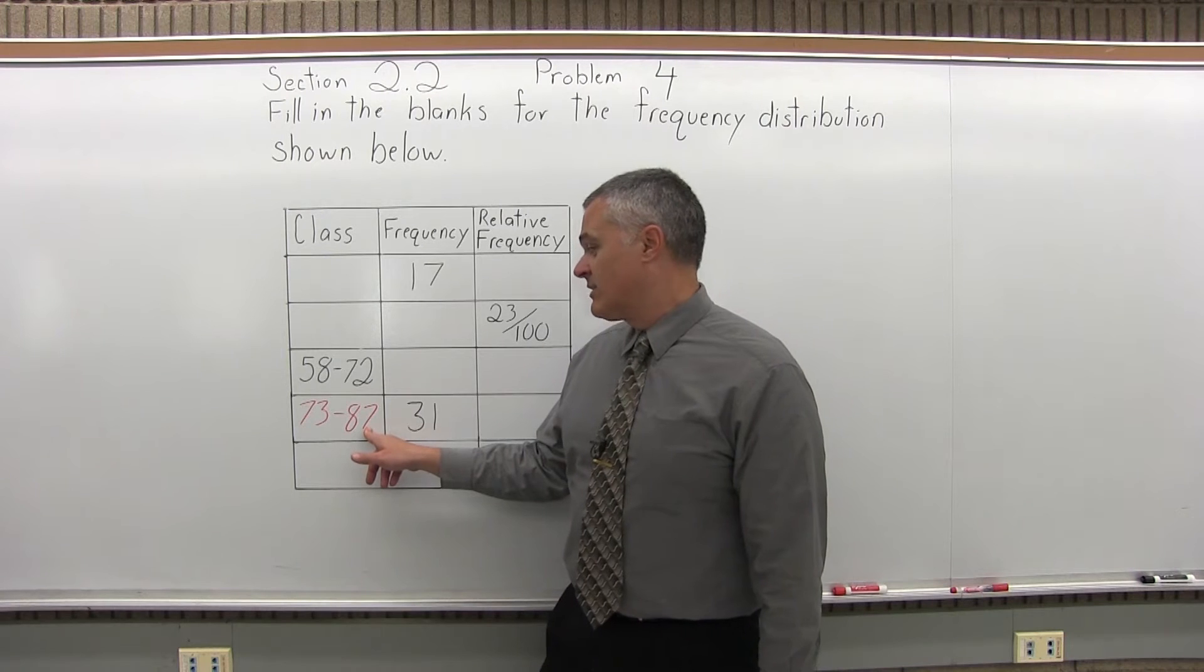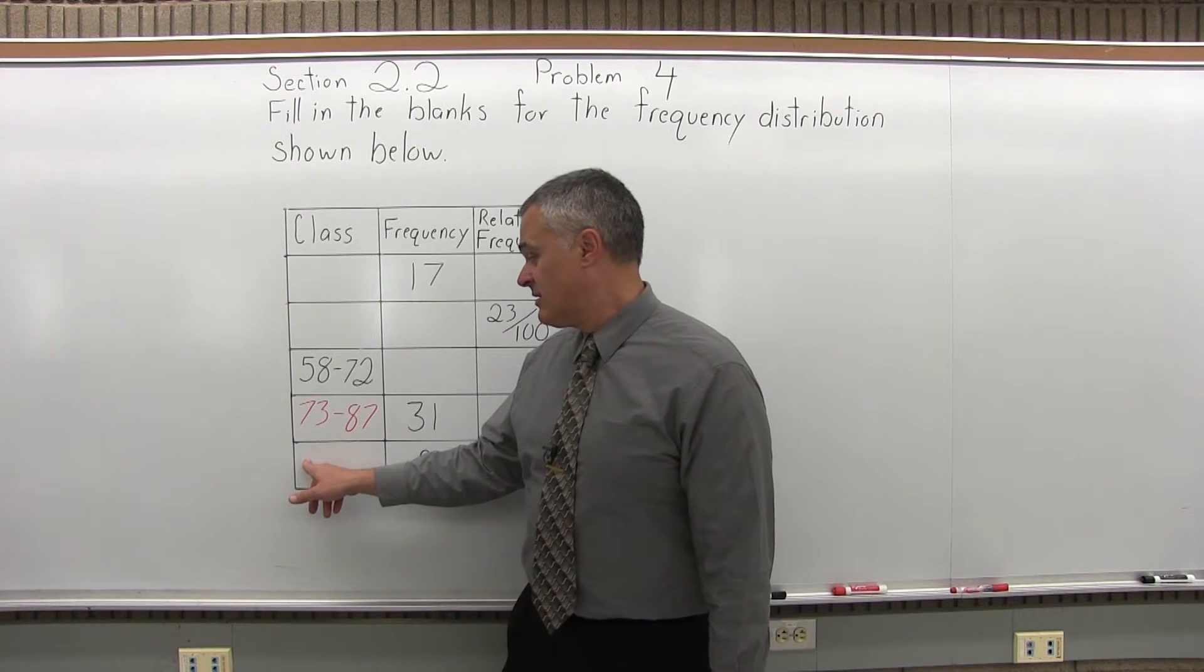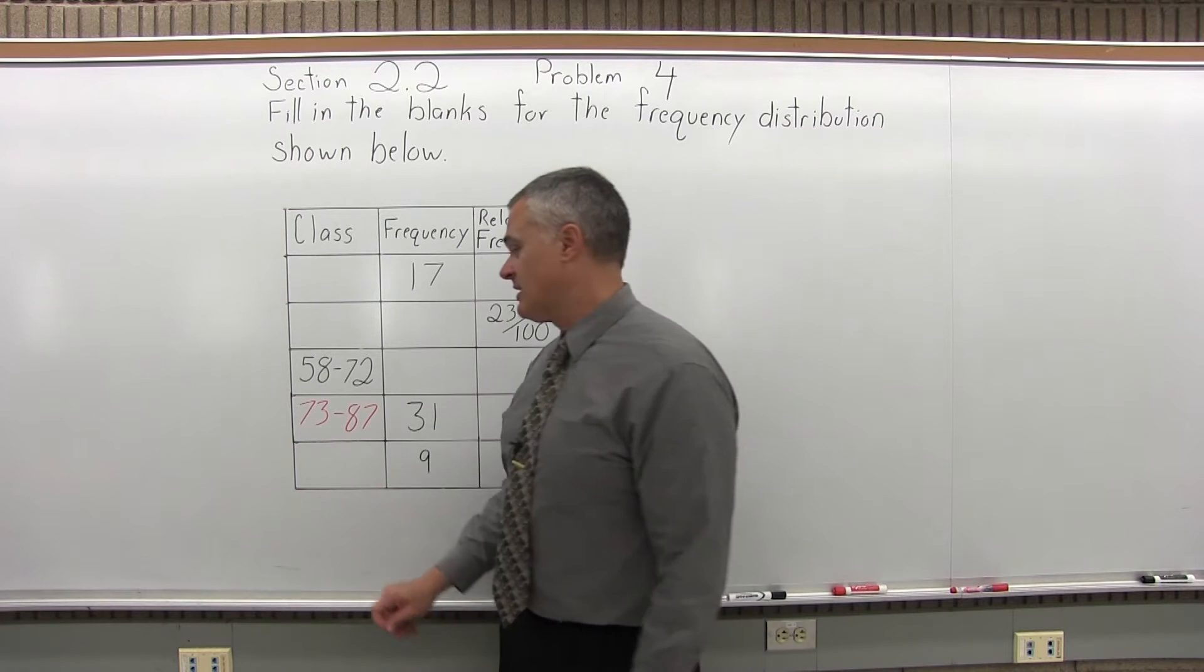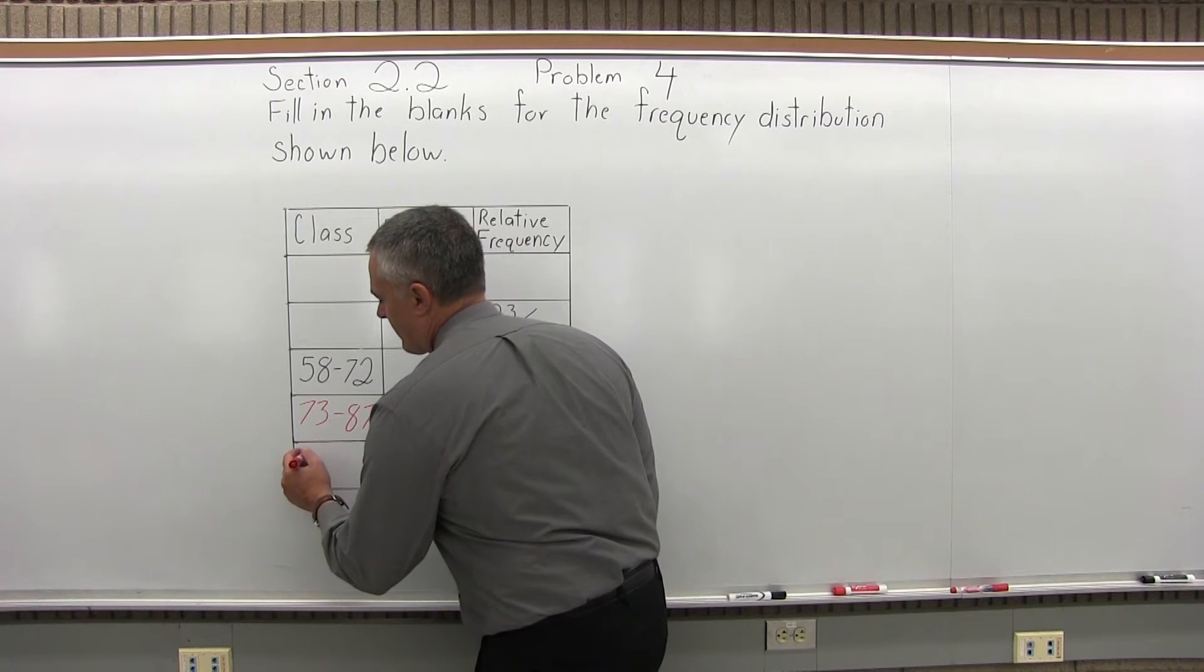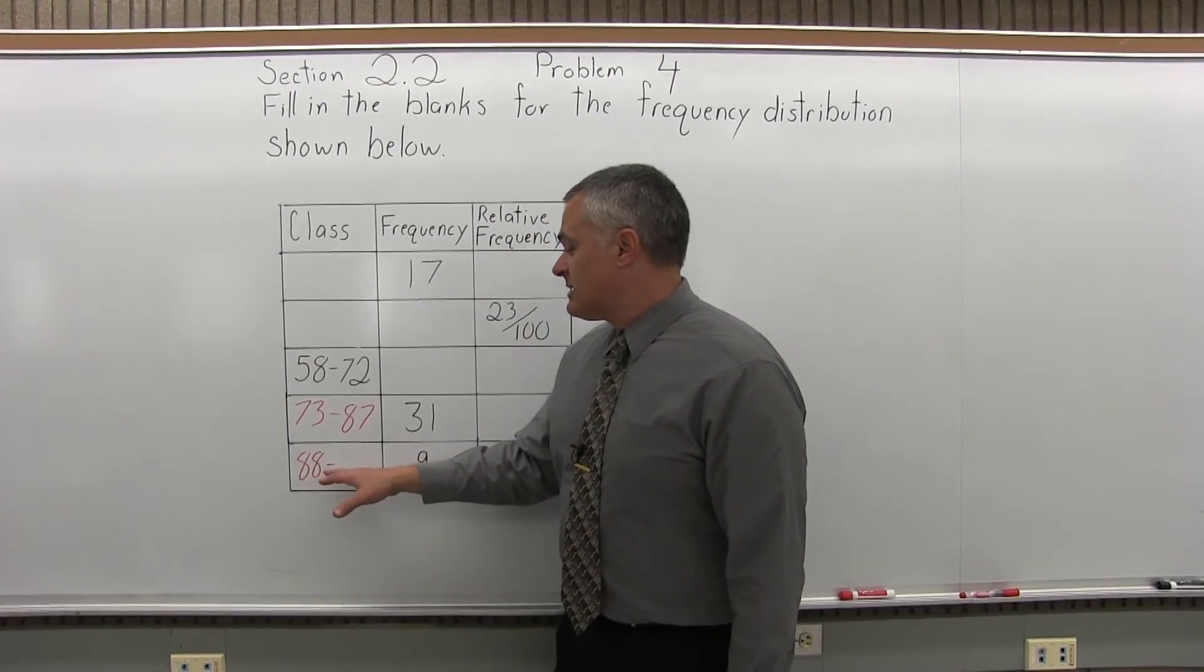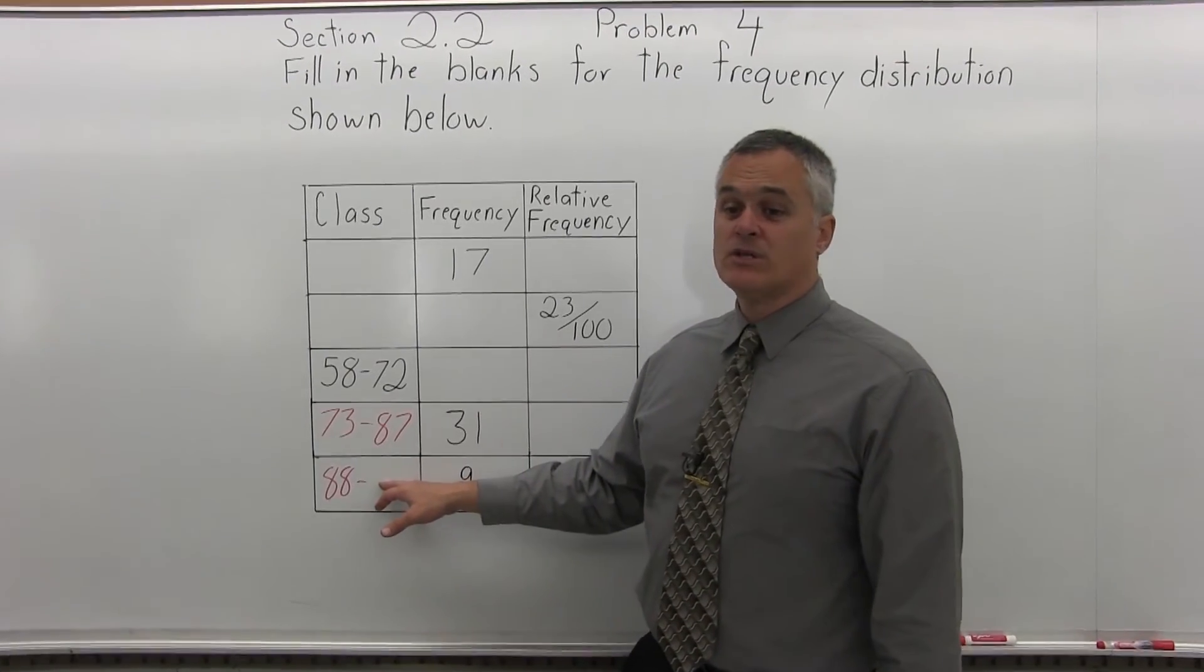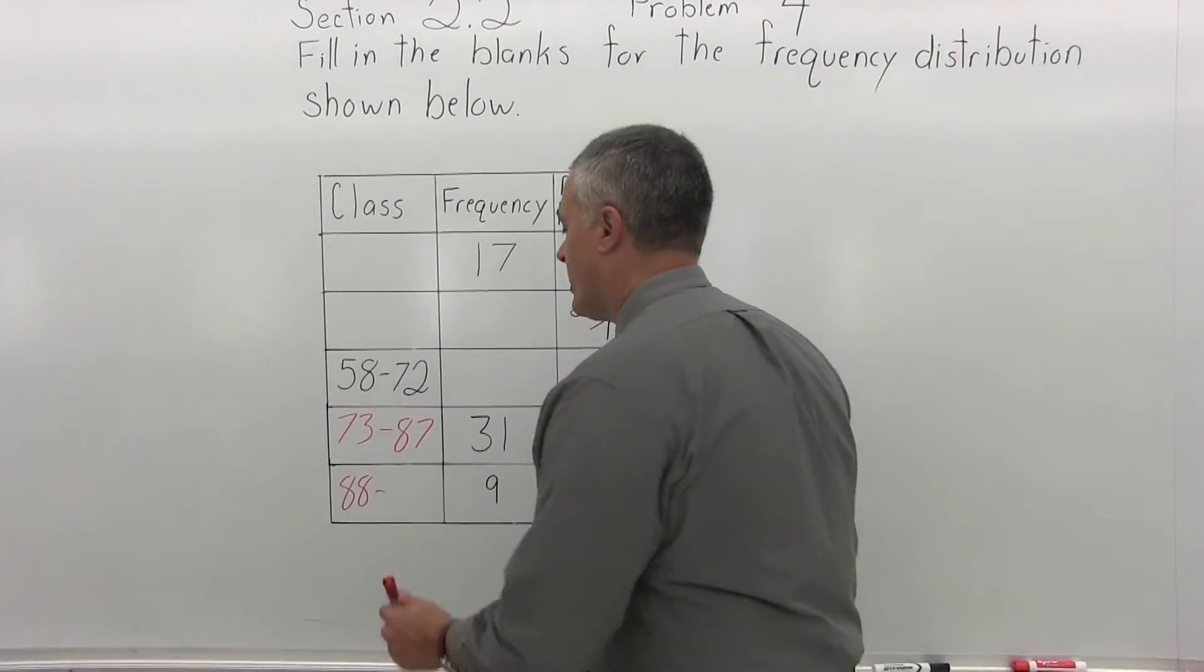And now I have a class that ends at 87. So I know because there's no gap and no overlap that the next class has to begin at 88. And if it begins at 88, it has a lower class limit of 88. The upper class limit must be 88 plus 14. So that would be 102.